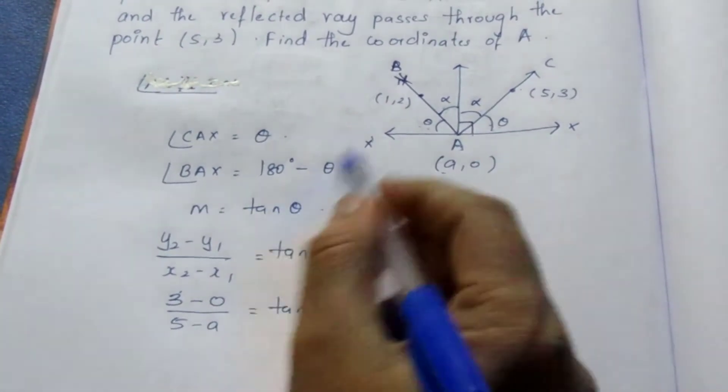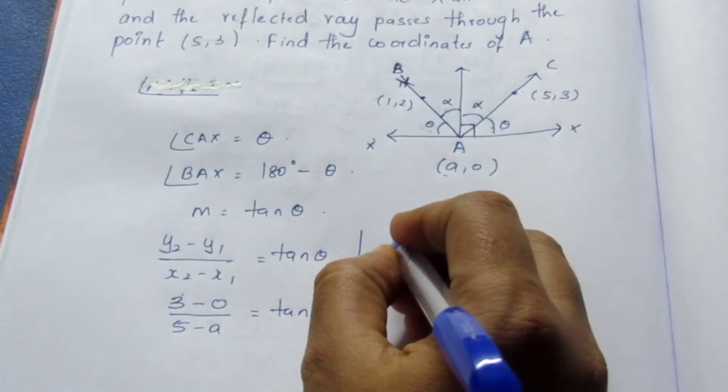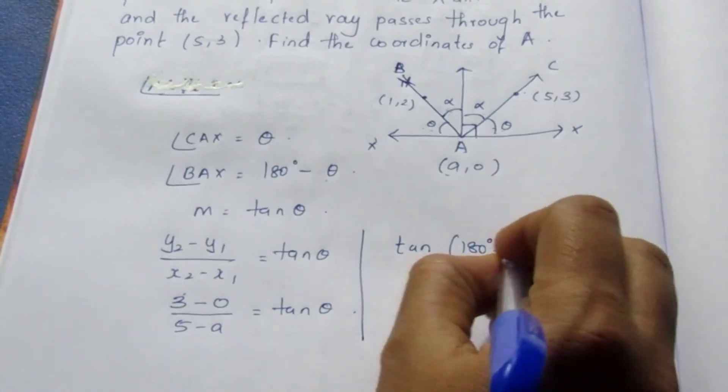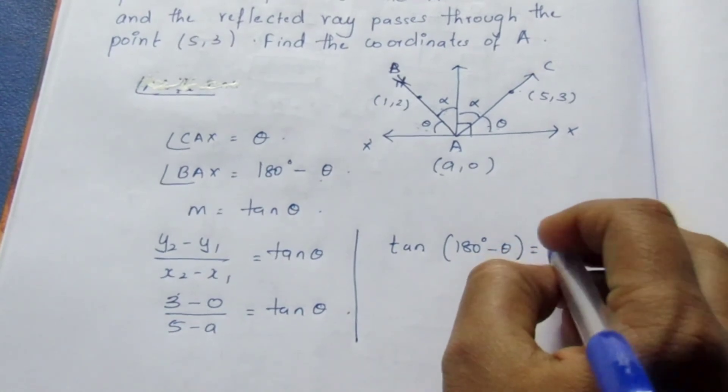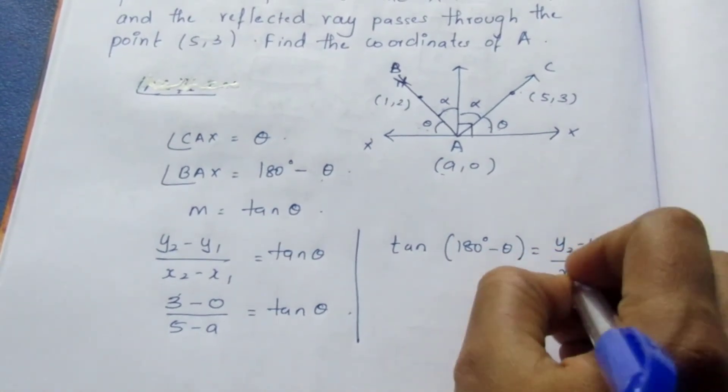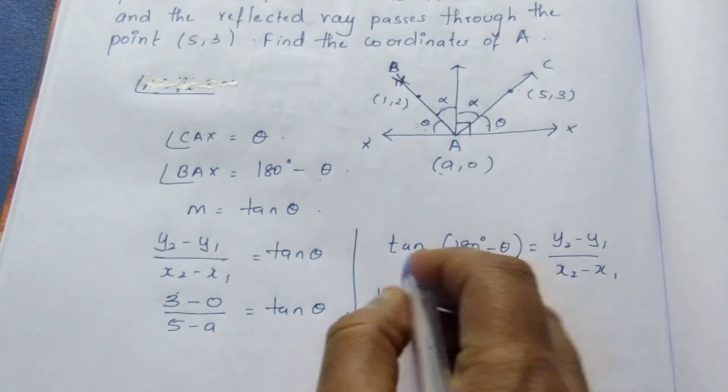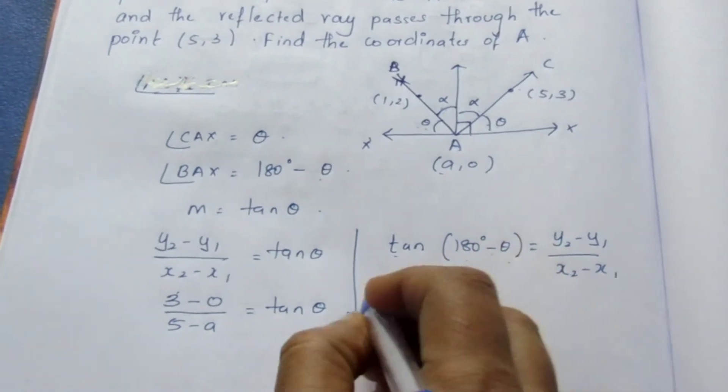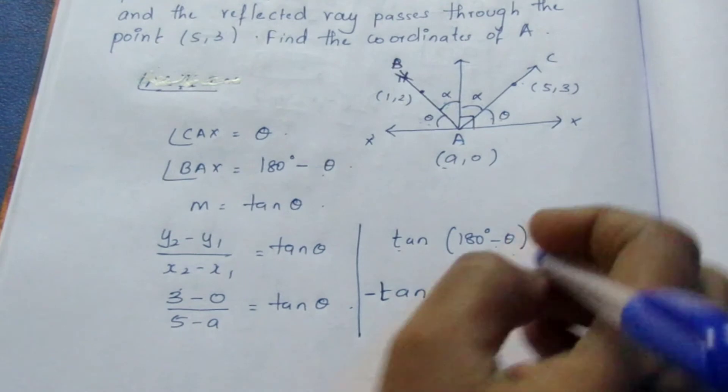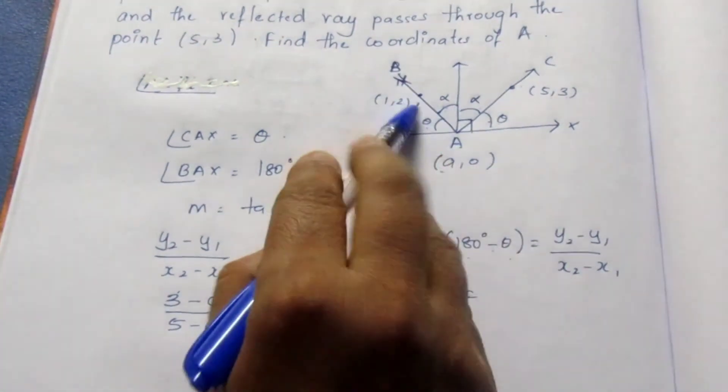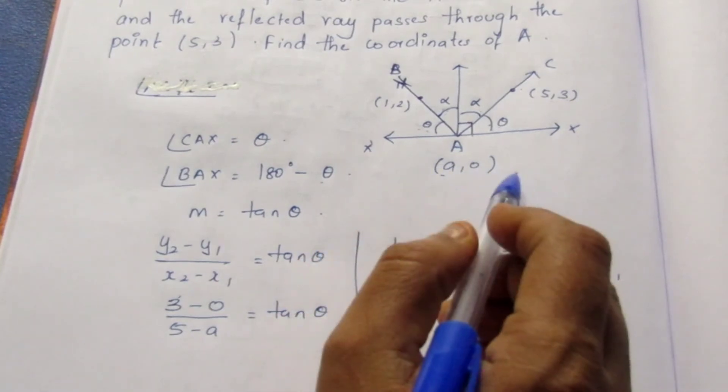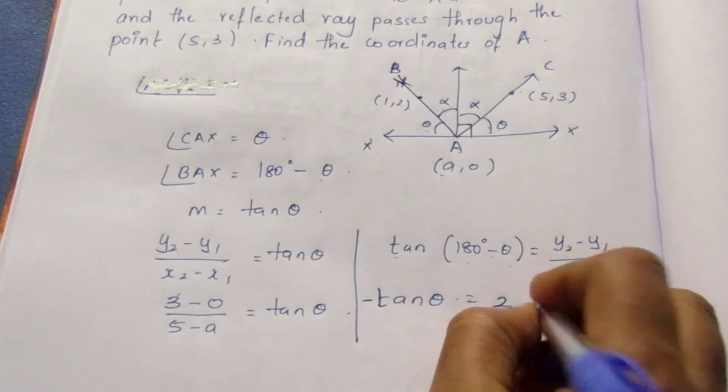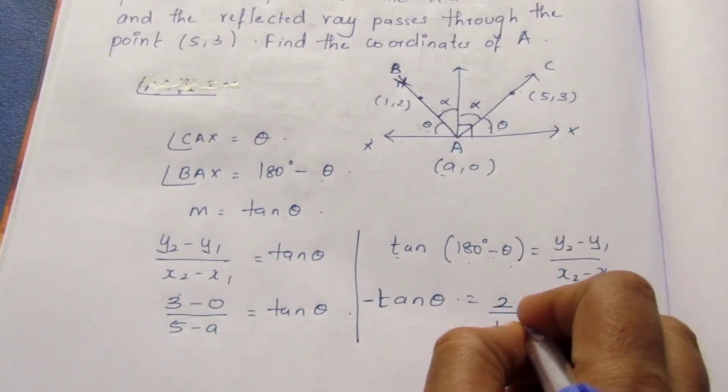Now, same way for this line, the theta value here is 180 minus theta. So 180 minus theta equals same formula, y₂ minus y₁ by x₂ minus x₁. So it becomes tan(180 - θ). It lies on the second quadrant, so tan there is negative. So minus tan theta equals—I am going to take this one as x₁, y₁ and x₂, y₂. So it becomes 2 by 1 minus A.